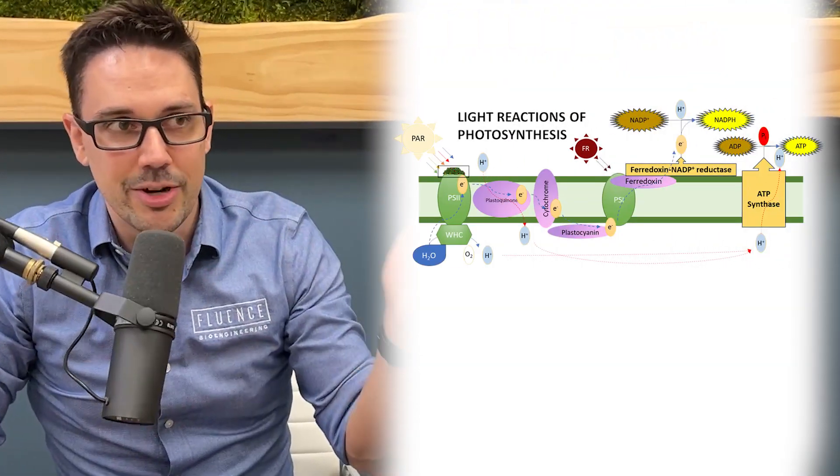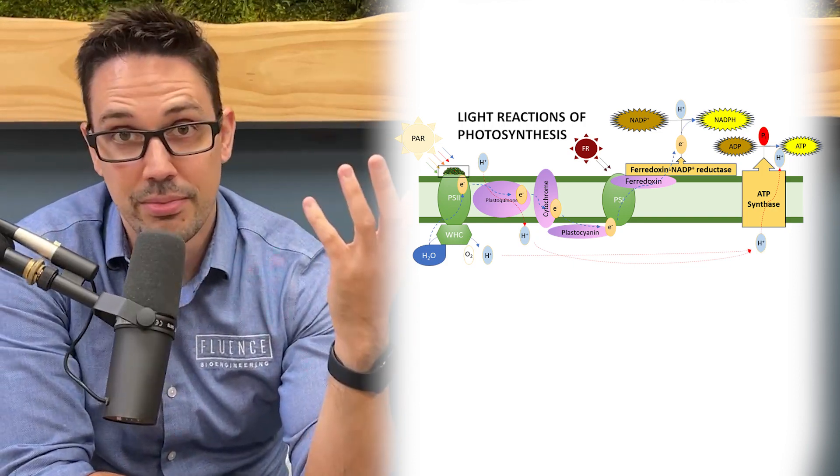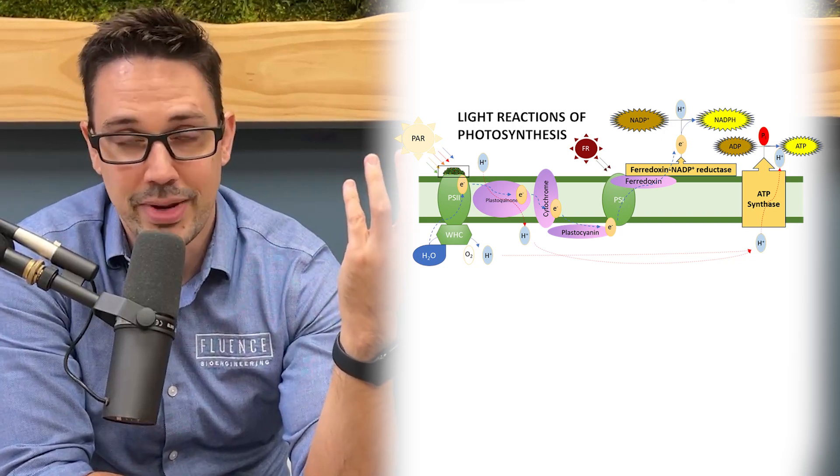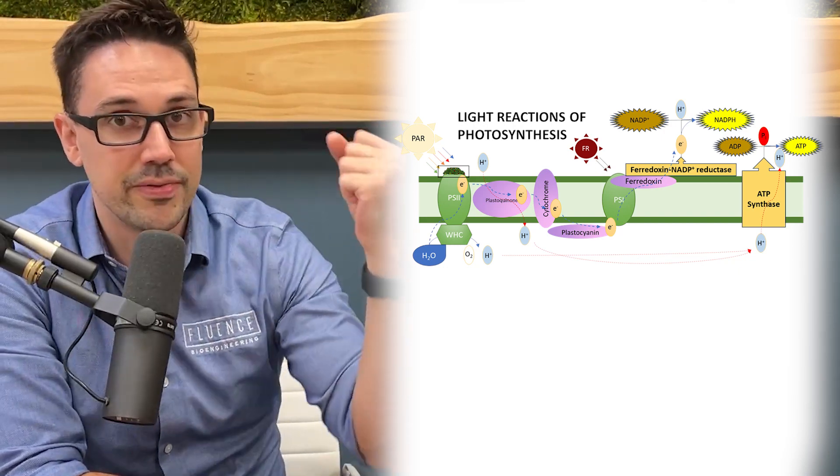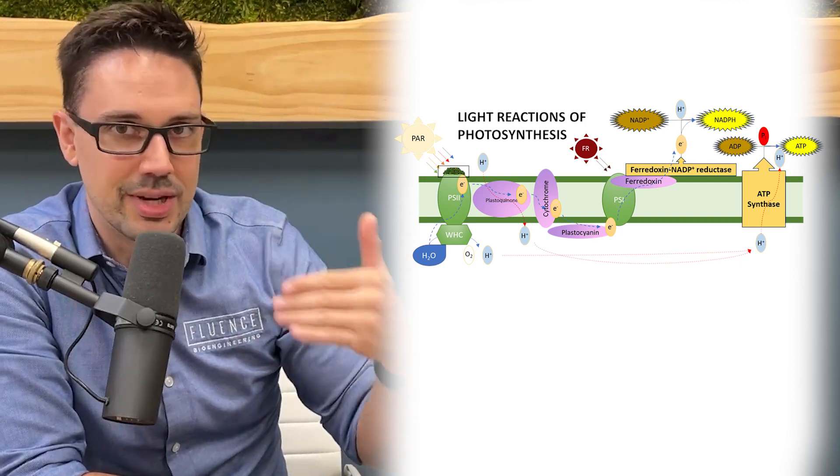Light reactions of photosynthesis. PAR light - 400 to 700 nanometer visible light - excites an antenna complex. You can think of an antenna complex like a solar panel. It's designed to capture photons and turn that light energy into something else.